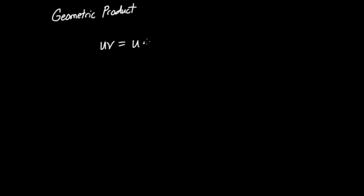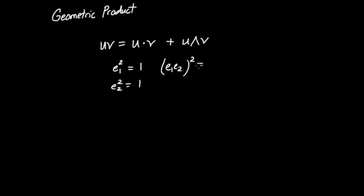Let's review the geometric product. If I had two vectors u and v, the geometric product uv is defined to be the sum of the dot product and the wedge product between the two. After working with this, we found that the basis vectors e1 and e2 have the property that e1 squared equals 1, and e2 squared also equals 1. We also found that the bivector e1 times e2, instead of squaring to plus 1, actually squares to minus 1. These were key features of the geometric product.